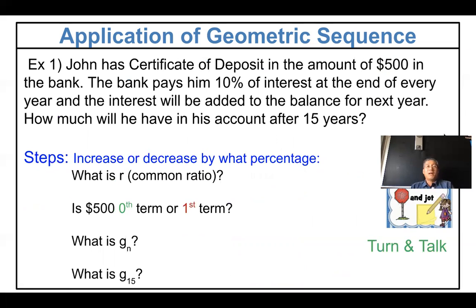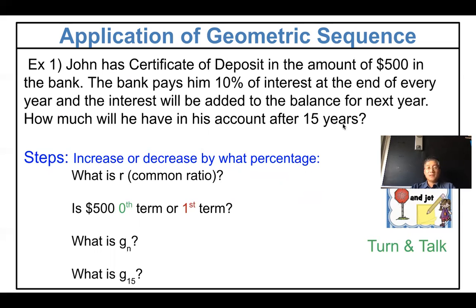Let's look at an example. John has a certificate of deposit of $500 in the bank. The bank pays 10% interest at the end of every year, and the interest is added to the balance for the next year. How much will he have after 15 years? The key question is: what is the first term? The sequence goes by year — first term is after one year, second term is after two years, and 15th term is after 15 years.